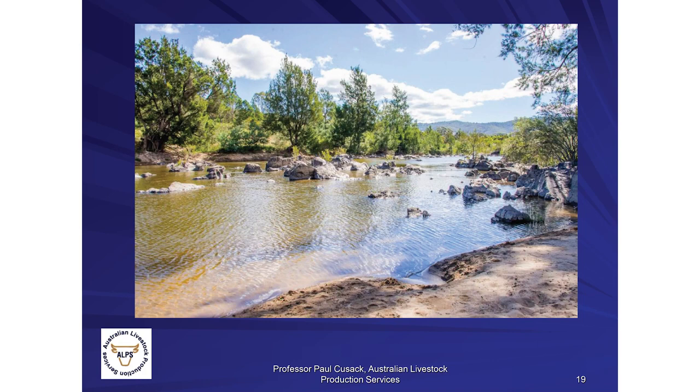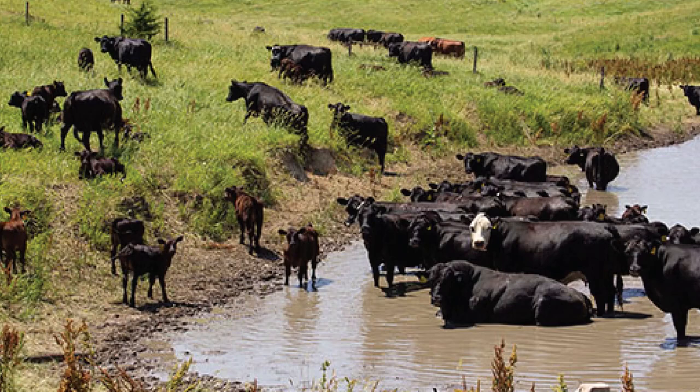There is surface water and there is surface water. A fast-flowing large body like the upper reaches of the Murrumbidgee presents no concerns about cleanliness. It's static surface waters that are the big problem. Cattle prefer cleaner water but they're not smart enough to stop dirtying their own water source — quite happy to stand in it, defecate in it, urinate in it — all of which makes the water dirtier, reduces intake, and reduces production.